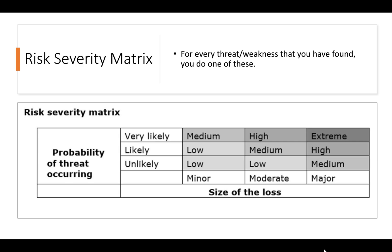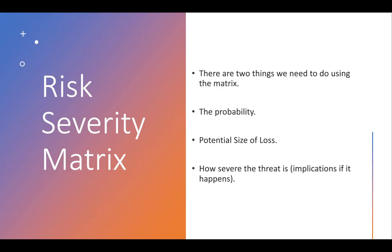This is the risk severity matrix table — it's given to you in the Activity One template and is very simple to use. What I've done in the past is create this table myself, have it in my document, and fill it in for every single thing I find. I simply copy and paste it each time.